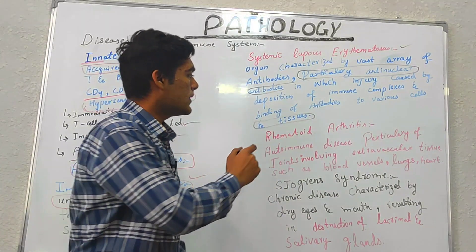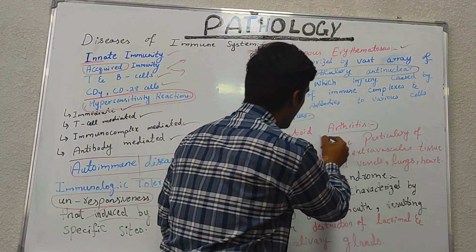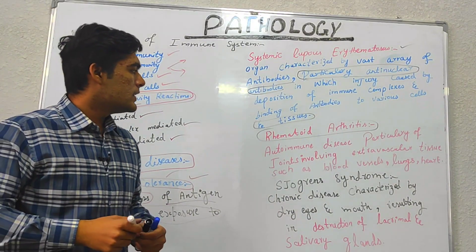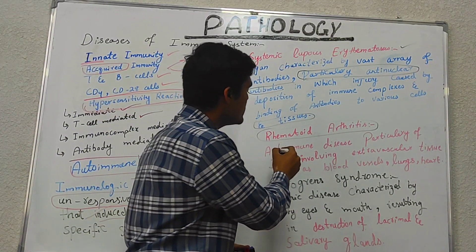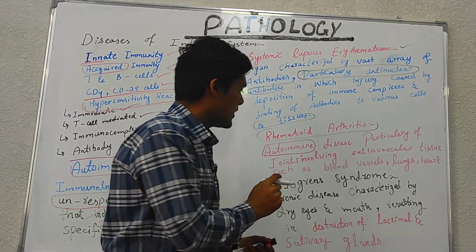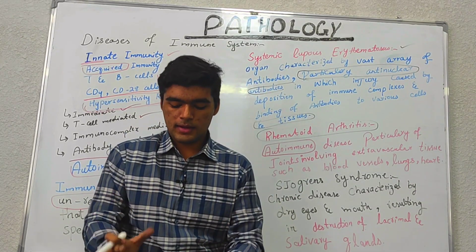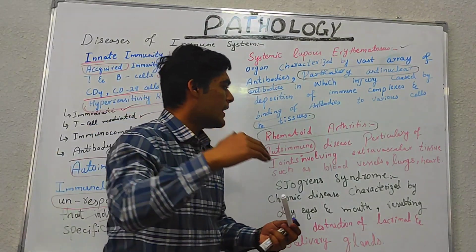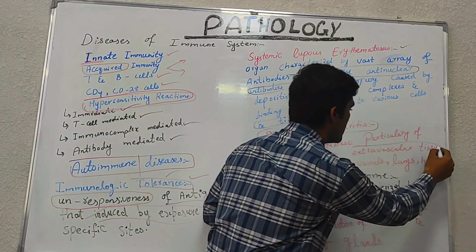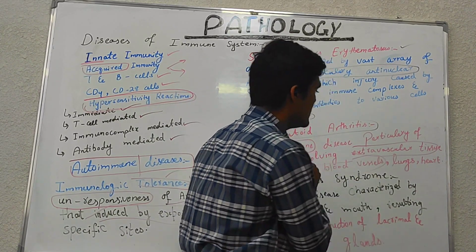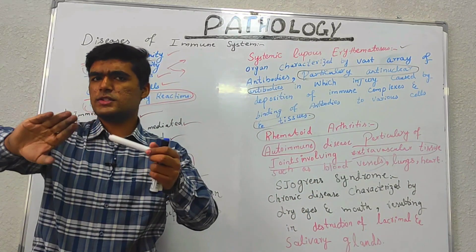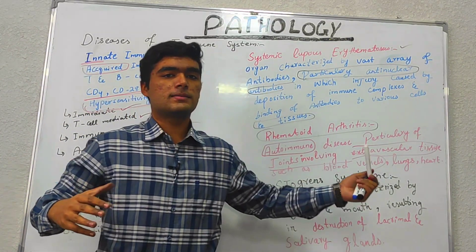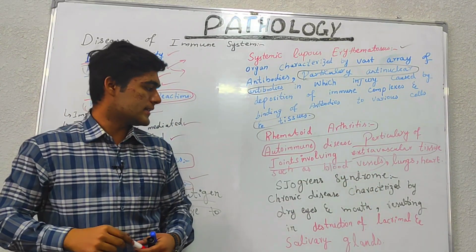We also have rheumatoid arthritis. It is an autoimmune disease of the joints in which swelling occurs in the joints. That swelling is due to extravascular tissues involving blood vessels. Tissues from the lungs and heart also accumulate, and we say this person is affected by rheumatoid arthritis.